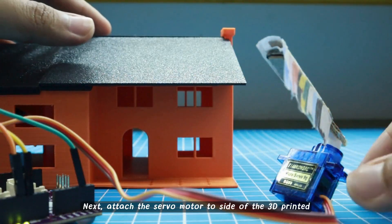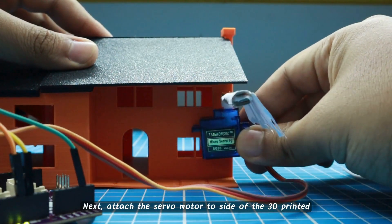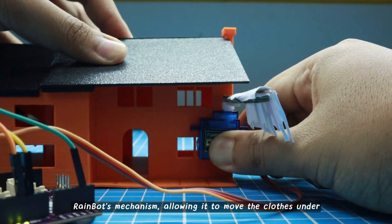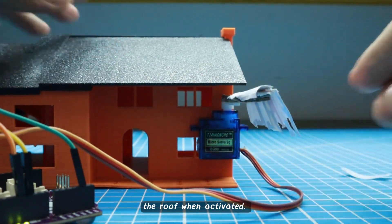Next, attach the servo motor to the side of the 3D printed house. This will control the movement of the rainbot's mechanism, allowing it to move the clothes under the roof when activated.